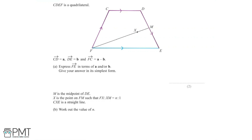Now we have enough information to express the vector FE in terms of a and/or b. We know that the vector FE is equal to FC plus CD plus DE. Using the information given, the vector FE is equal to a minus b — because FC equals a minus b — plus a, because CD equals a, and plus b, because DE equals b.